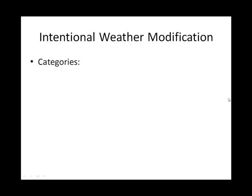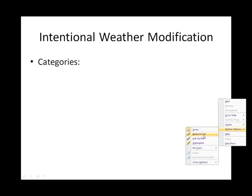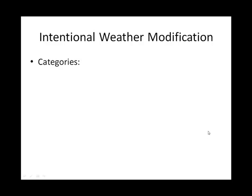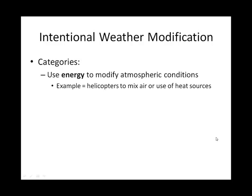There are various times when conditions are dry and we wish it would rain, or there's too much rain and we wish it would go somewhere else, or we've got a cold spell coming through and we wish it were warmer. How can we, in a local region, modify the weather — change the conditions of the atmosphere? There is ongoing work in that area, and we have sought to change the atmosphere in three different categories.